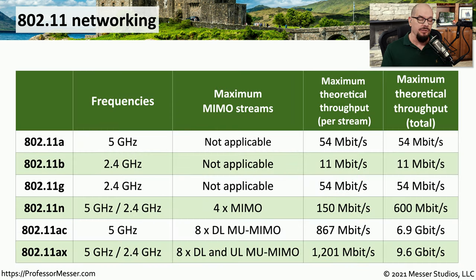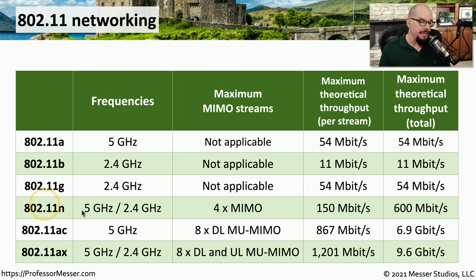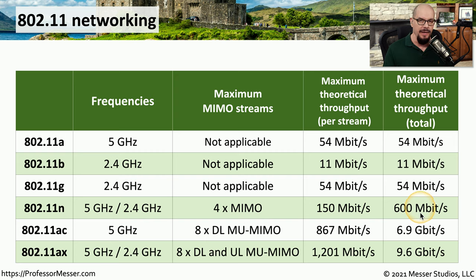Here's a summary of the six standards. 802.11a is a 5 gigahertz technology with no MIMO and a maximum theoretical throughput of 54 megabits per second. 802.11b operates at 2.4 gigahertz, also with no MIMO, and a maximum throughput of 11 megabits per second. 802.11g is also a 2.4 gigahertz technology with no MIMO, operating at 54 megabits per second. 802.11n can operate on either 5 gigahertz or 2.4 gigahertz, supports MIMO with four streams, giving a maximum theoretical throughput of 600 megabits per second.